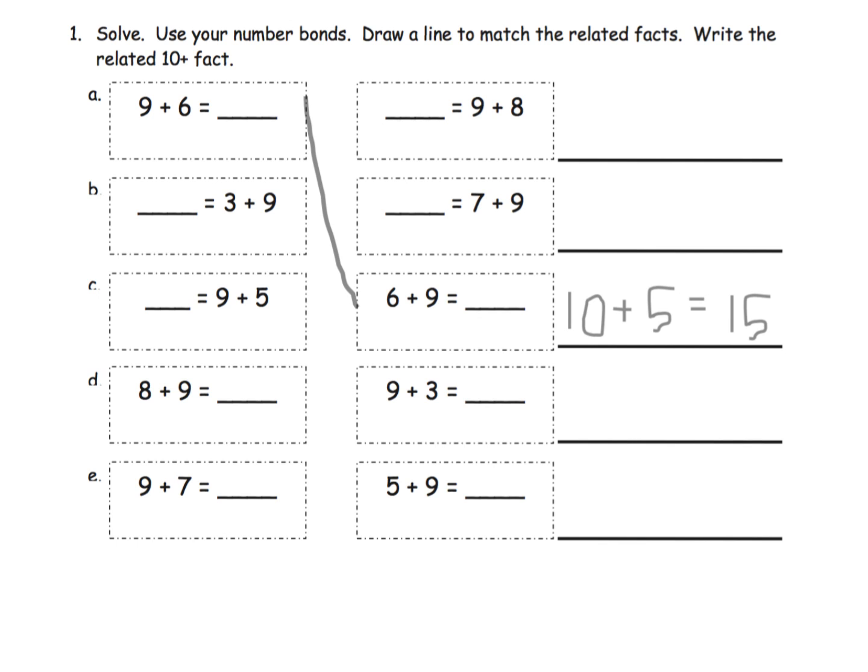We're going to do that by drawing lines, and then over here we're going to write the related 10 plus fact in order to get the answer. The idea is here's 9 plus 6, here's 6 plus 9, and they're connected by the commutative property.